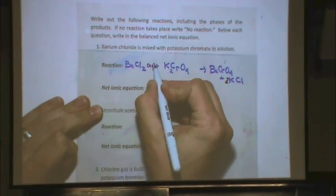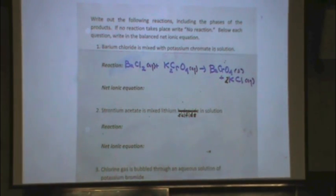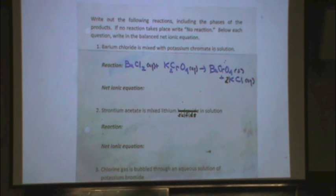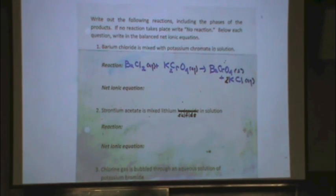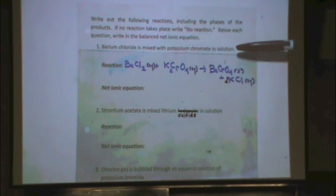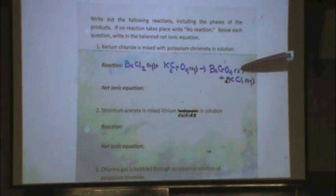According to bullet 5, barium chromate is actually insoluble. So filling in the state symbols: aqueous, aqueous, solid, aqueous. That's step 2 — writing the state symbols for the ionic equation. This is a double replacement. Whenever a double replacement forms a solid from aqueous compounds, we have a specific name: a precipitation reaction. It's a type of double replacement called precipitation, because of that solid right there.